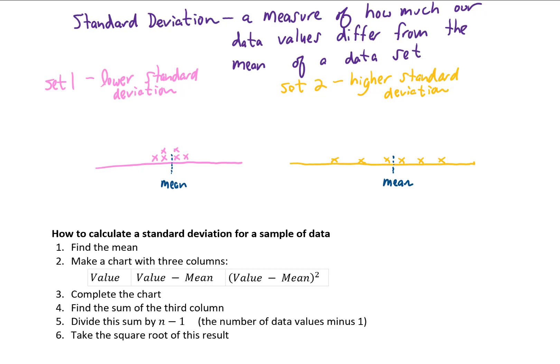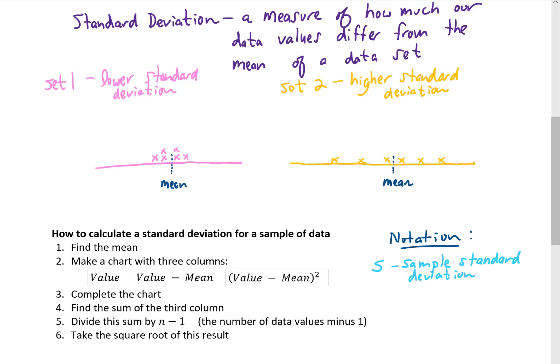Given some set of data, we want to know how to calculate the standard deviation. One note about notation: s is the letter we use to denote a sample standard deviation, and typically it's sample standard deviations that we'll be calculating. If we know the standard deviation of a population, it would be written as the Greek letter sigma, which we'll use quite a bit in the following section.